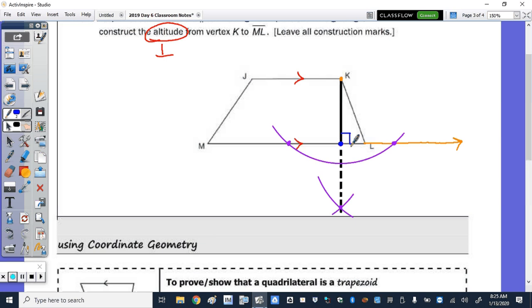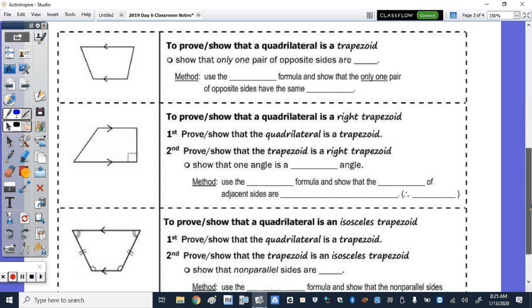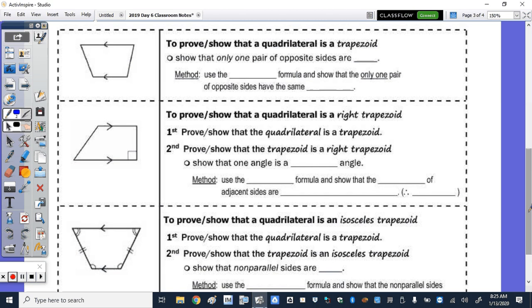Now we're going to finish with one coordinate geometry proof. But let's talk about the ways to prove the different types of trapezoids. To just prove that you have a trapezoid, we show that only one pair of opposite sides are parallel. To do this, we have to use the slope formula and show that only one pair of opposite sides have the same slope. So that means calculating the slope of all four sides.